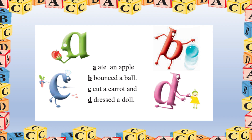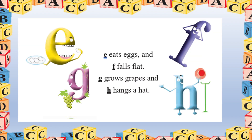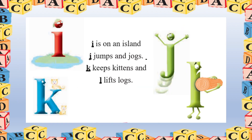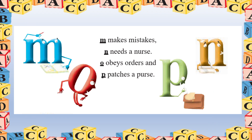A ate an apple, B bounced a ball, C cut a carrot and D dressed a doll. E eats eggs and F falls flat, G grows grapes and H hangs a hat. I is on an island, J jumps and jogs, K keeps kittens and L lifts logs. M makes mistakes, N needs a nurse, O obeys orders and P patches a purse.